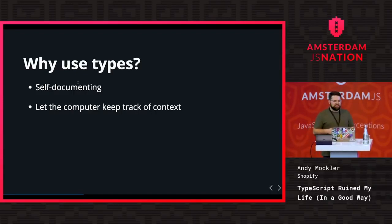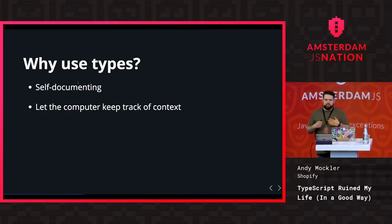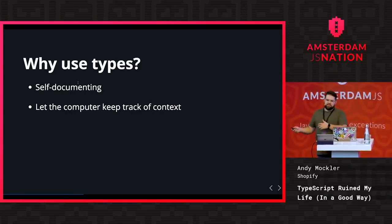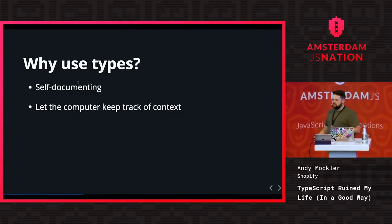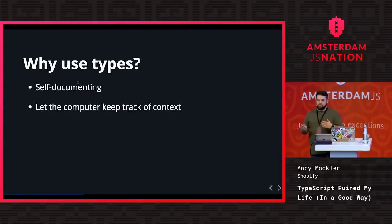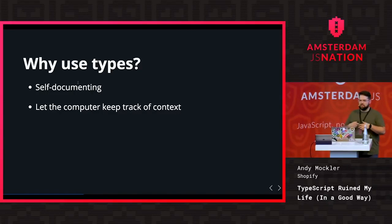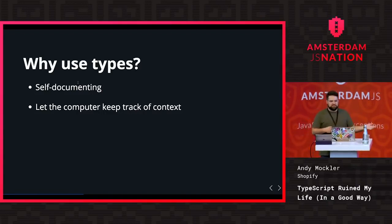Types let the computer keep track of context instead of you and your team. When you start a project, maybe you can remember where you've called certain functions. But if you change the parameters a function takes, the compiler will catch that across your whole codebase. Anything that calls into that function is going to have to satisfy the compiler before it will successfully compile.